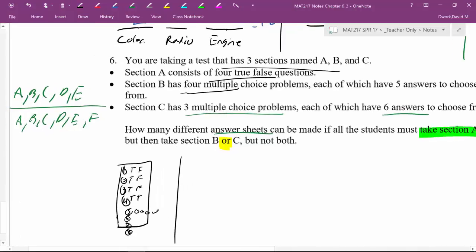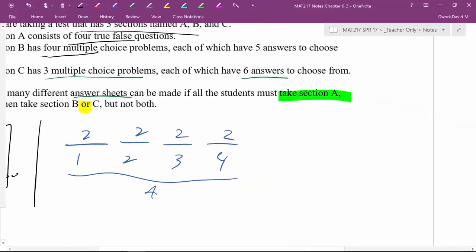All right. So, decisions and choices. If you think of it as decisions and choices, it usually falls out pretty much easier. So, if you were a student taking a test, the first decision you have to make is, I have to do problem number one. Problem number one, how many choices do I have? Two. It's either true or false. Problem number two, two choices. Problem number three, two choices. Problem number four, two choices. Those, this is all section A. That is the true false part. Right?